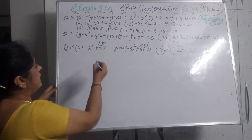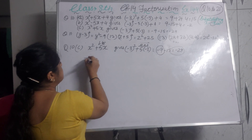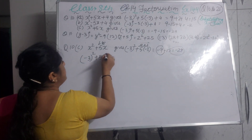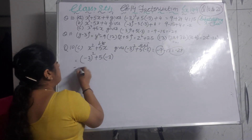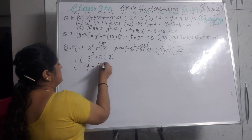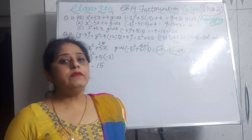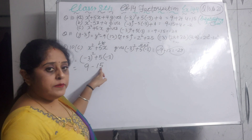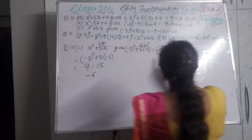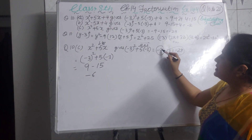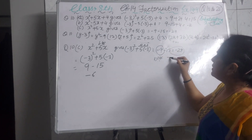Now part c: x² + 5x, substituting x = minus 3. Minus 3 whole square is plus 9, and 5×(minus 3) = minus 15. Since one is positive and one is negative we subtract; the larger number is 15, so 15 minus 9 = 6, and the answer is minus 6. The error is that they wrote (minus 3)² as minus 9 instead of plus 9, making the answer wrong.